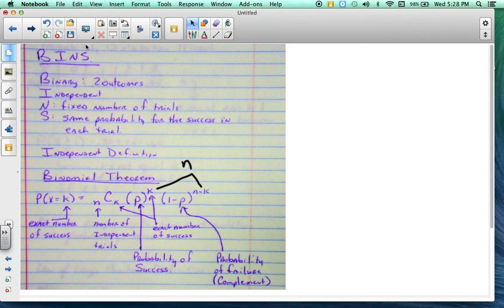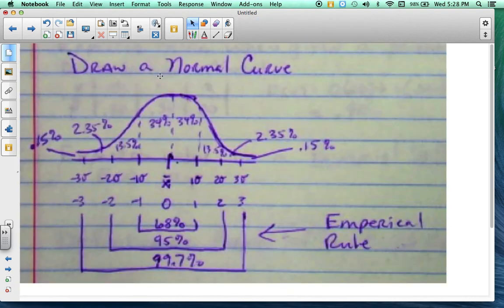Now I'm going to go to the next page. Draw a normal curve. Make sure you label it. Make sure you know your 68, 95, 99.7 rule, and how to split up the percentages. That's the empirical rule.